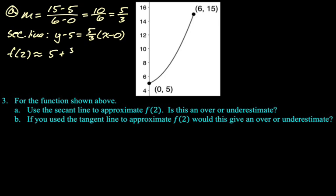So we say f of 2 approximately equal to, that approximate sign is really important. And then we plug in and we get, I get 25 over 3, which I think is right. 15 plus 10, 25. Yeah.